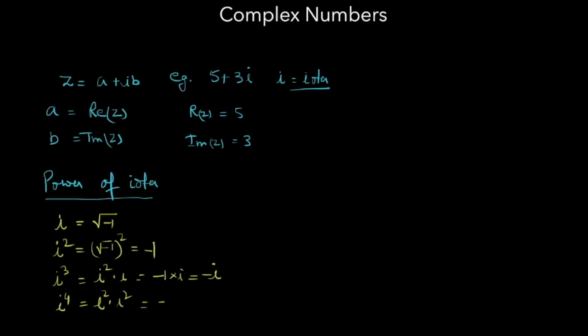iota square is minus 1 into minus 1. This means that iota raised to power 4k equals 1. This is important.